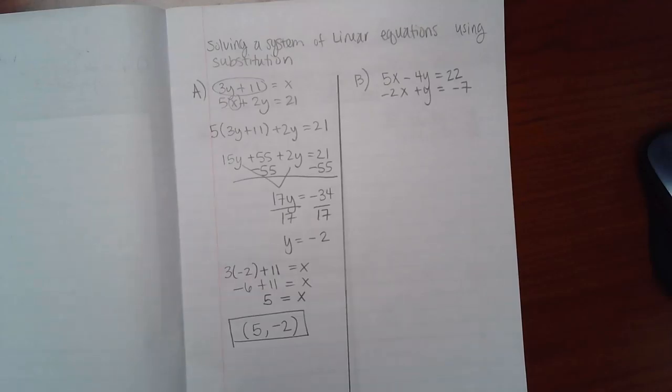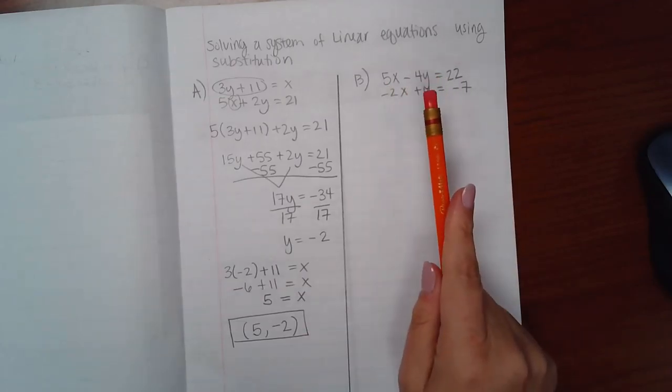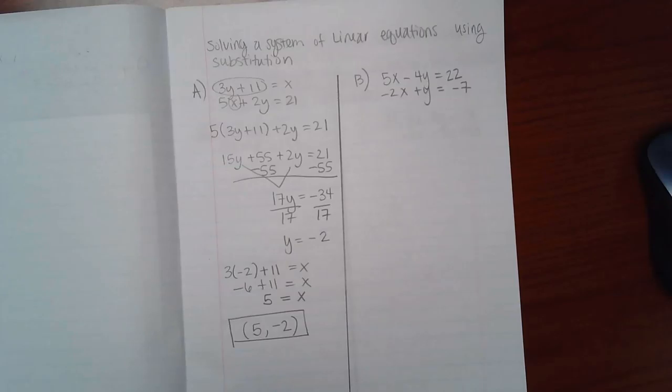But some equations and some variables will be easier to solve for than others. For example, in part b, you notice that the bottom equation has the variable y with the single coefficient of positive 1. If you have an equation that has a single variable with the coefficient of positive 1, that is going to be your easiest variable to isolate.